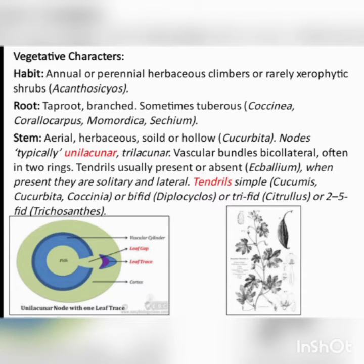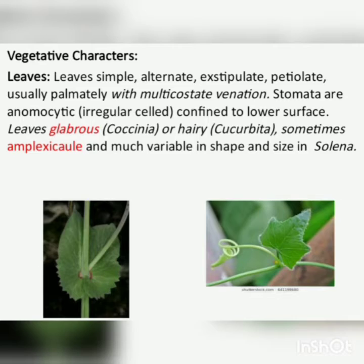Vegetative characters. Habitat: annual or perennial herbaceous climbers, rarely xerophytic shrubs. Root system is taproot and it is branched, sometimes tuberous stem. Aerial herbaceous, solid or hollow. Nodes typically unilacunar or trilacunar. Vascular bundles are bicollateral, often in two rings. Tendrils usually present or absent; when present they are solitary and lateral, simple or bifid or trifid.